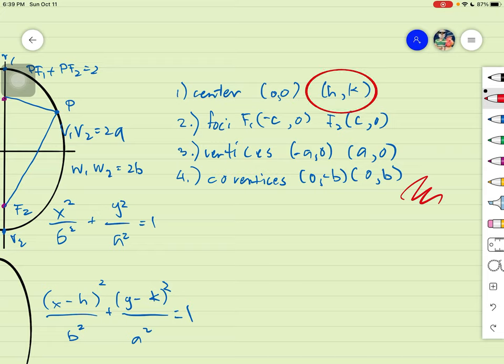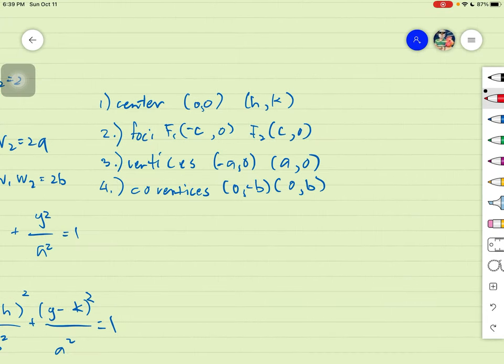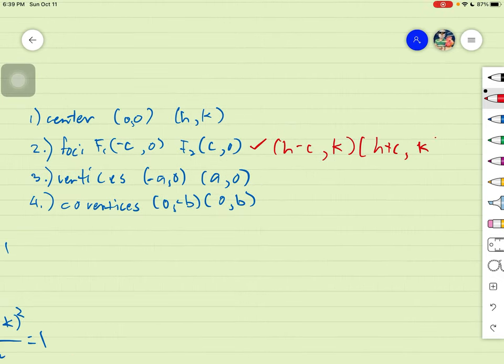But then again, kung yan ay h, k, the only thing that will change is yung h, k. And then you have to amend your foci. So mangyayari dito, para sa foci natin, magkakaroon ka lang ng ekstra ng h and k. So for example, dito sa foci, mangyayari lang dyan, dadagdaga mo lang ng h, h minus c, and then yung k. And then you will have h plus c, and then your k. Hindi naman nagbabago yung y. But the only thing that will change is your h, or your x value. Same goes dito. Your vertices will be always referring to your center, which is h, k. So meron kang h minus a, and then k. Then you will have h plus a, and then you will have k.